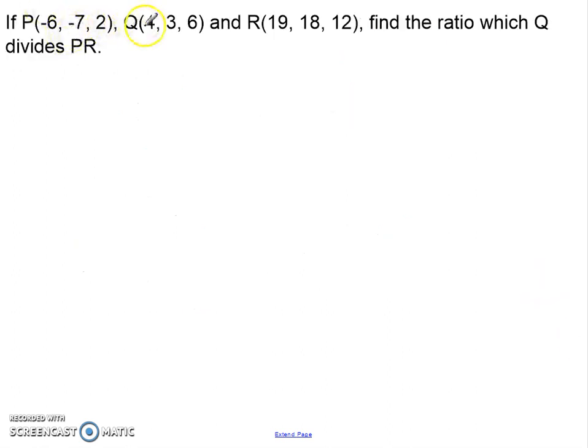Second part was: if P equals this, Q equals this, and R equals this, find the ratio which Q divides P to R. So, again, you can imagine we've got P to R, and there's our point Q. We've got it in the ratio of M to N. We want to know what M to N is. Well, what we have to do is look at the journey we do for each of them. So, we have to look at the journey in X direction, Y direction, and Z direction for each one from P to R.